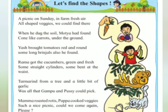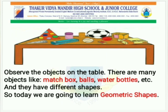Hey children! So, what do we learn from this poem? Yes, there are so many shapes in our nature. Today we are going to learn about different types of shapes and their edges and corners. Children, tell me what you all can see on the table. Yes, there are many objects on the table like matchbox, balls, water bottle, etc. — and yes, there are different shapes too. So, today we are going to learn geometric shapes.